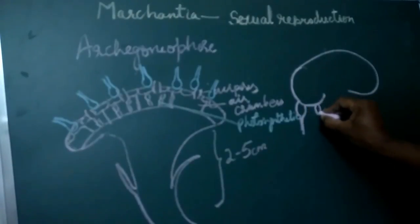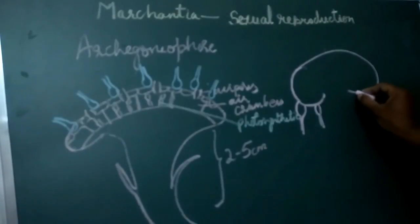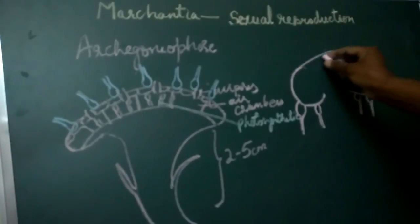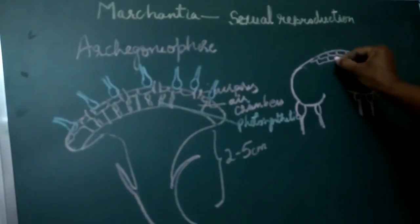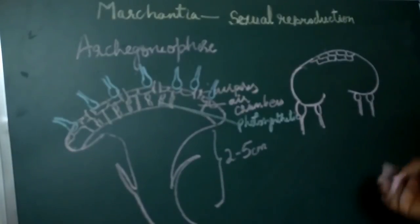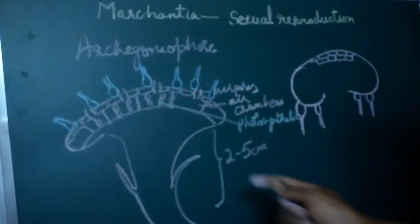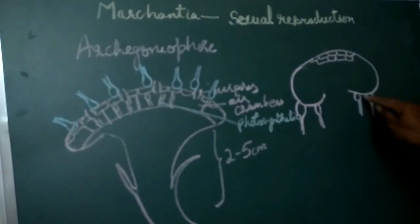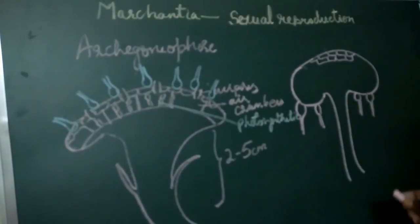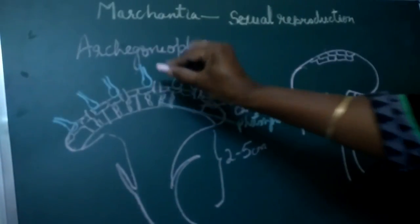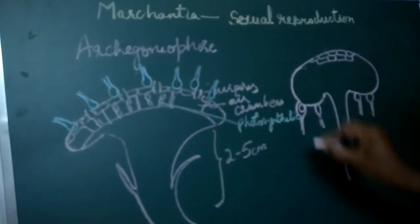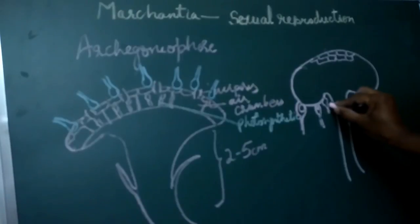The archegonia are seen on the ventral side with their necks hanging down, facing the ventral surface. This is because of the rapid increase in cells in the center of the peltate disc on the dorsal surface compared to the ventral surface, causing the lobes to curl downwards and get inverted. This results in a change of position of the archegonia: before inversion, the mature archegonia are towards the center and developing ones towards the periphery; after inversion, the mature archegonia are towards the periphery and the younger ones towards the center.